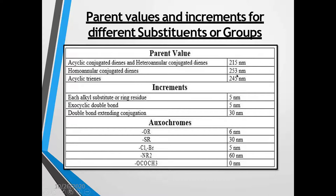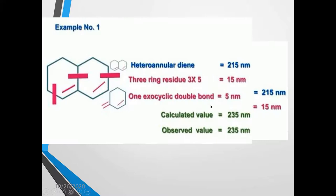Suppose a molecule contains both heteroannular diene as well as homoannular diene, then the base value considered will be 253 nanometers. If a triene system is present in a molecule, then for each double bond extending the conjugation, plus 30 nanometers is added to the base value. The triene will have the base value as 245 nanometers. Then, if there are alkyl substituents or a ring residue, 5 nanometers is added to the base value.